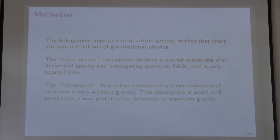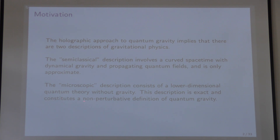As probably all of you know, the holographic approach to quantum gravity implies that there are two descriptions of gravitational physics. There is a semi-classical description, which involves a curved spacetime with dynamical gravity and propagating quantum fields. And this description is effective but approximate. There is also a microscopic description, or a boundary description, which consists of a lower dimensional quantum theory without gravity. And this description is exact and constitutes, in some cases, a non-perturbative definition of quantum gravity.